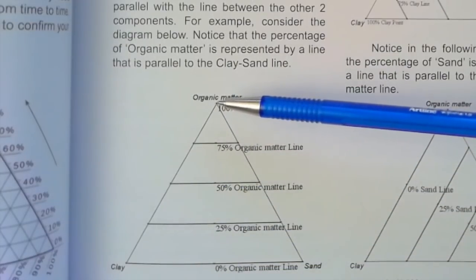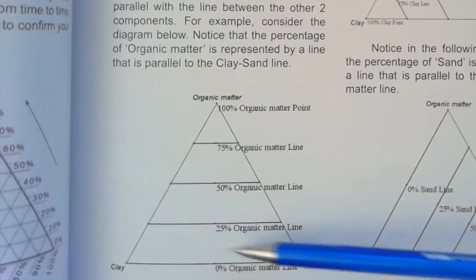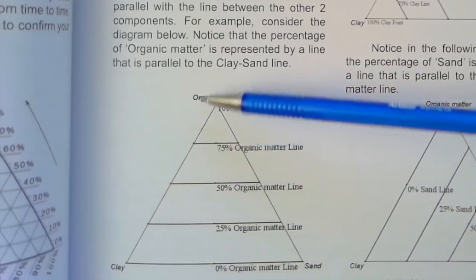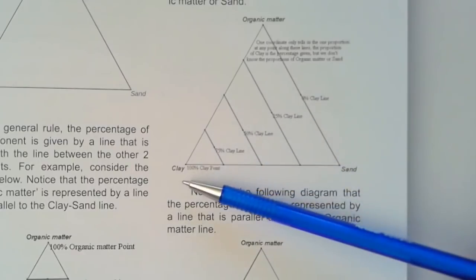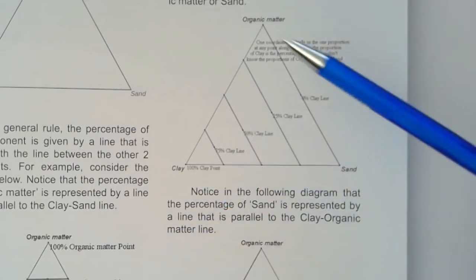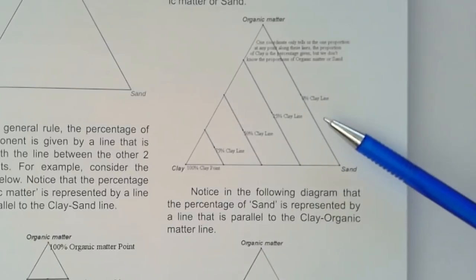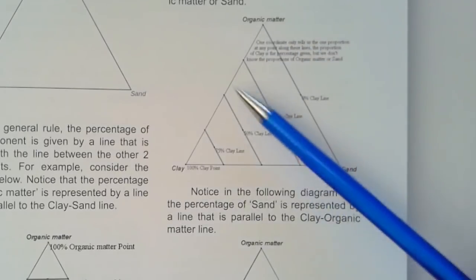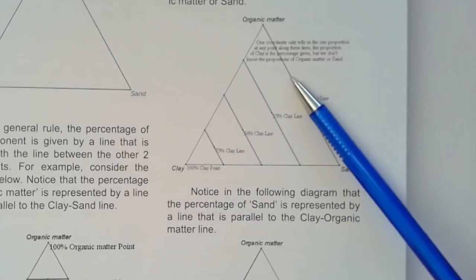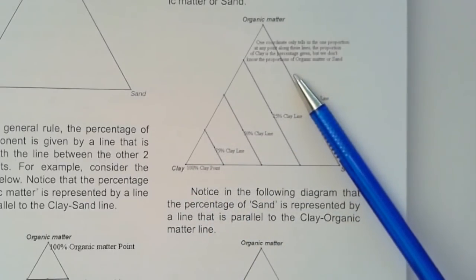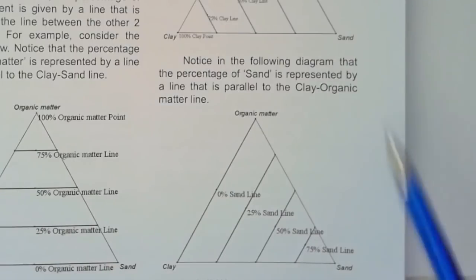So this is the top of the triangle so parallel to the base are the lines for organic matter, whereas for clay if the clay is in the left corner the base of the triangle for clay is over here. So then you're going to read the percentages going right up to the 100% for clay but by starting at 0% on the opposite side. And it's the same thing for sand or whatever you have in the bottom right corner.